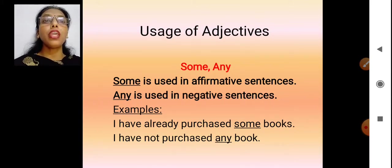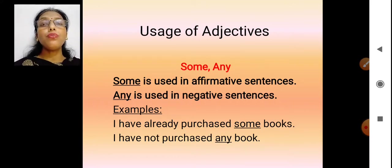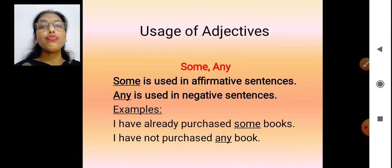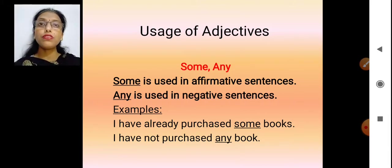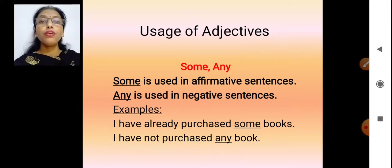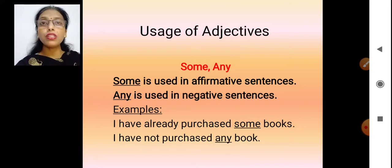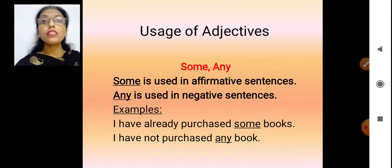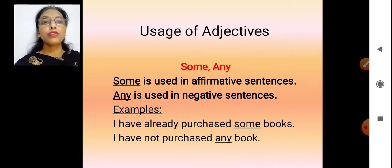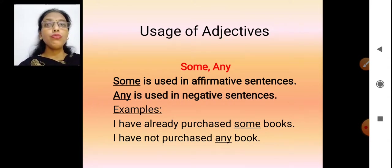Now let's look at the usage of adjectives — some and any. 'Some' is used in affirmative sentences, meaning positive sentences. 'Any' is used in negative sentences. For example: 'I have already purchased some books' — it's a positive sentence with no negative word. But 'I have not purchased any book' — the word 'not' makes it negative, so we use 'any'. Reversing them would be incorrect: 'some' belongs in positive sentences and 'any' in negative sentences.